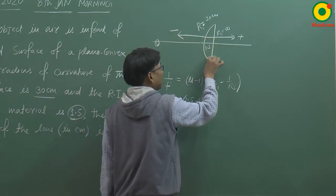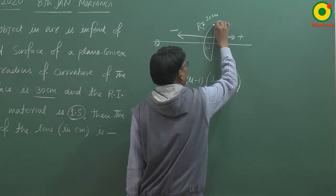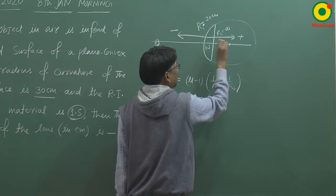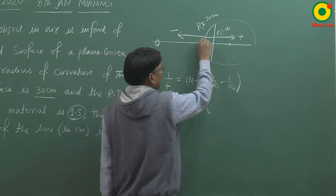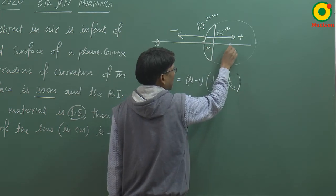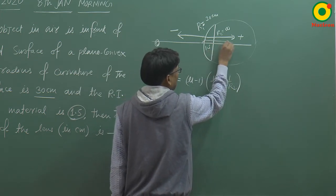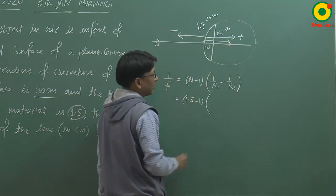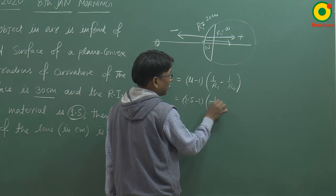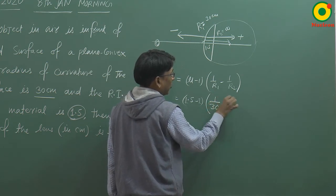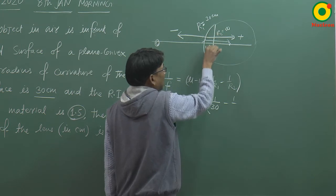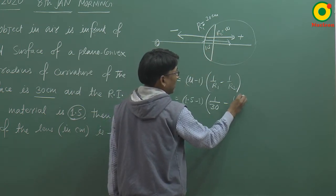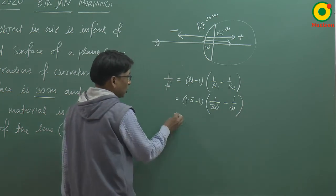तो यह जो spherical surface है, इसको complete करेंगे तो कुछ ऐसा बनेगा जिसका center आएगा right side में. तो इस पहले वाले surface का center of curvature इधर है, तो इसका R1 positive side में आएगा. तो R1 का value रखेंगे plus 30. Minus 1/R2 जो है, उसका radius of curvature infinity है, तो वो term 0 हो जाएगा.